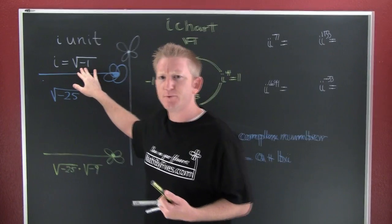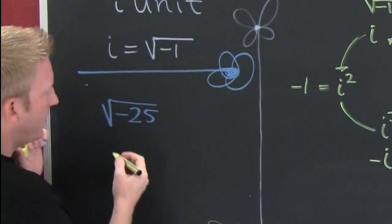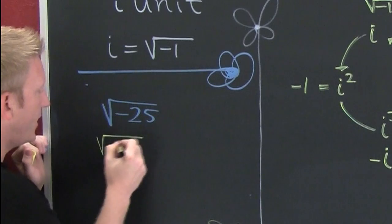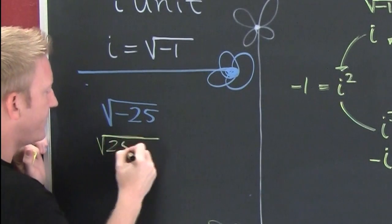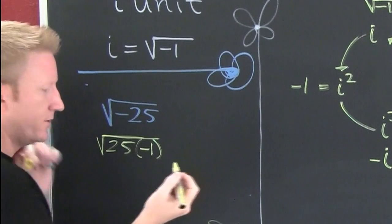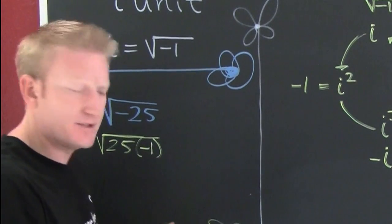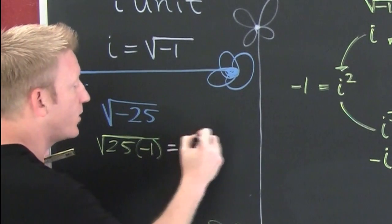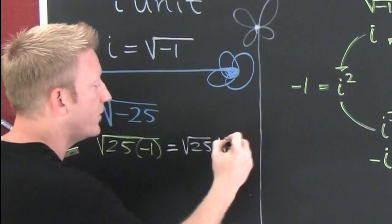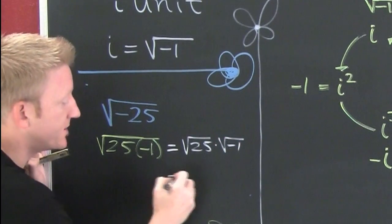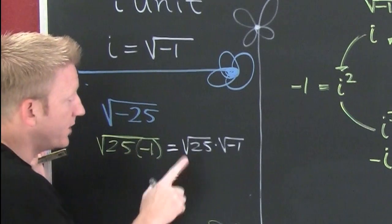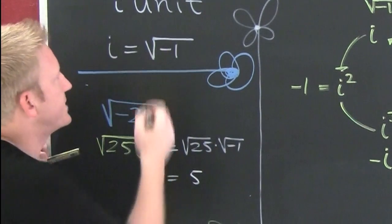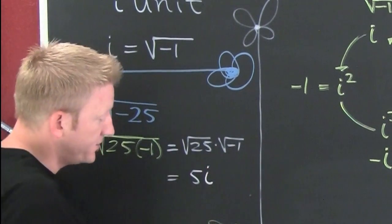Knowing this, let's explore these roots. If I was looking at this, I could break this up into the square root of 25 times minus 1, right? I know the root of the product is the product of the roots, so that's the square root of 25 times the square root of minus 1. The square root of 25 is 5, the square root of minus 1 is defined to be the i unit, so that's going to be 5i.